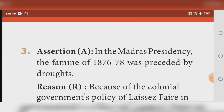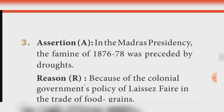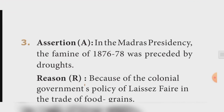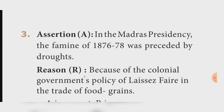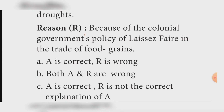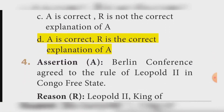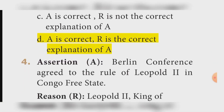Assertion-Reason, question three: Assertion — In the Madras Presidency, the famine of 1876 to 1878 was preceded by droughts. Reason — Because of the colonial government's policy of laissez-faire in the trade of food grains. Answer: Option D — Assertion A is correct and Reason R is the correct explanation of A.